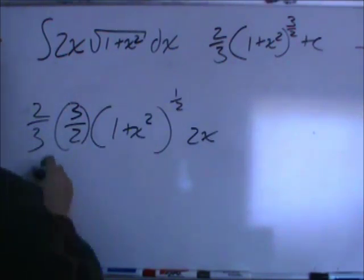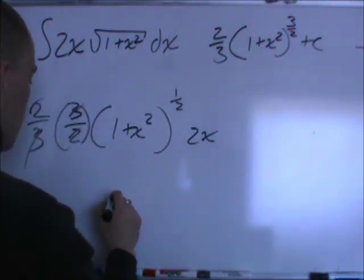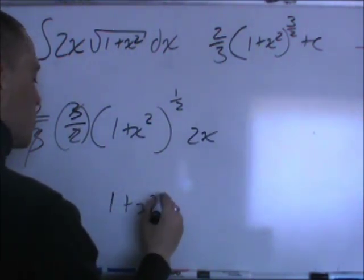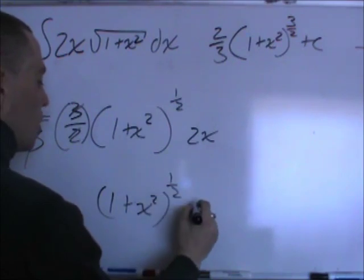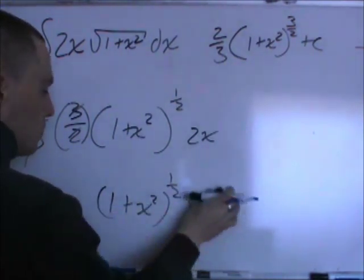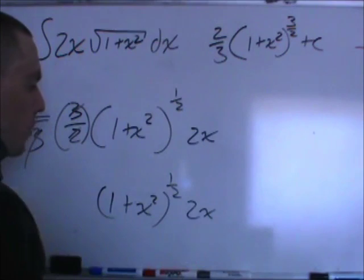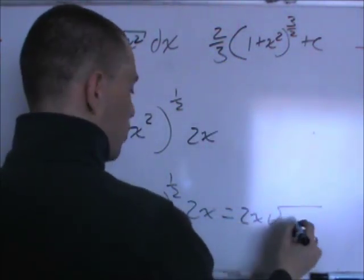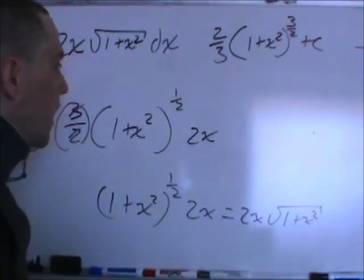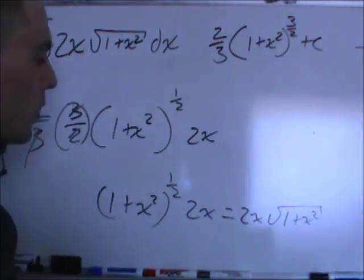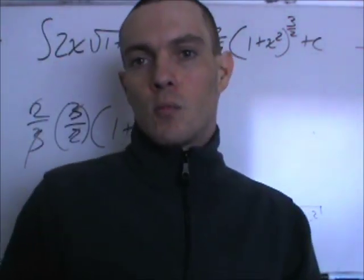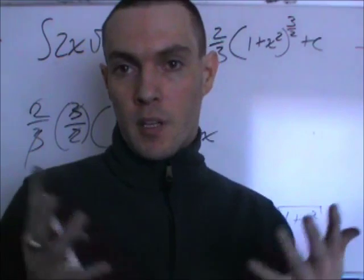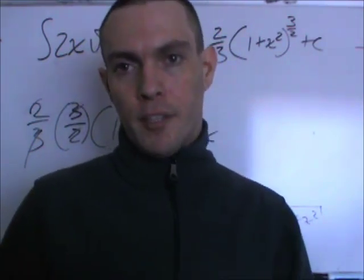And now it's a matter of simplifying, so the 3's cancel, 2's cancel, and that's going to leave us with 1 plus x squared to the 1 half power 2x. Another way to write that is going to be 2x square root 1 plus x squared, and that is indeed the integrand we started with, so we know that we have not gone colossally wrong in this system that I'm proposing to you. I hope you find this useful, have a great day.